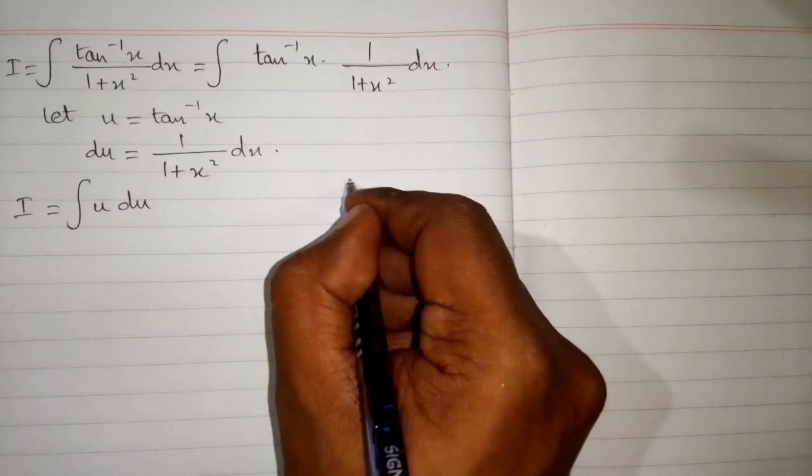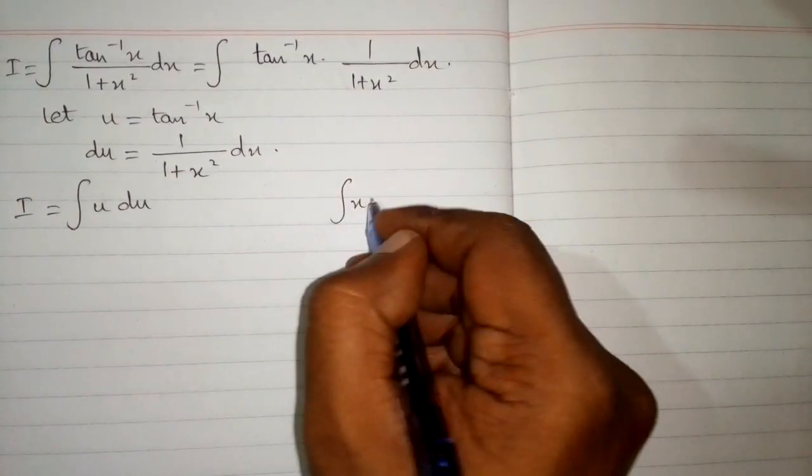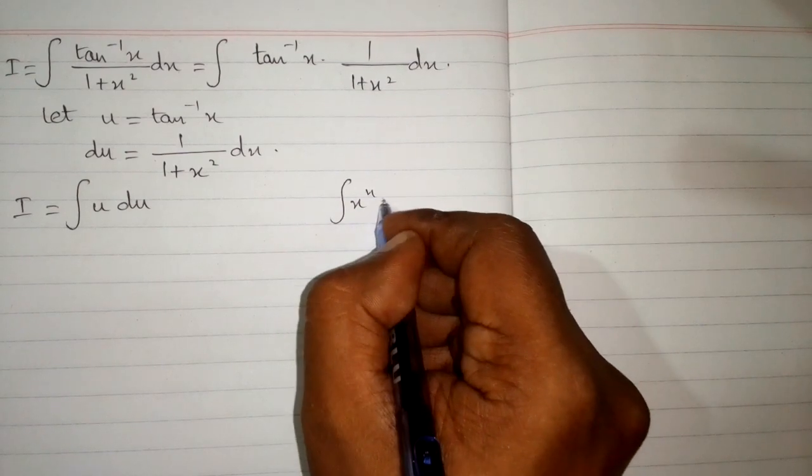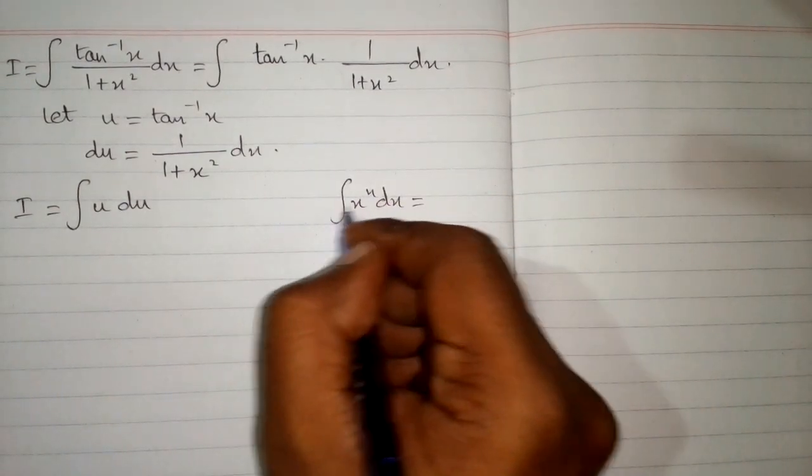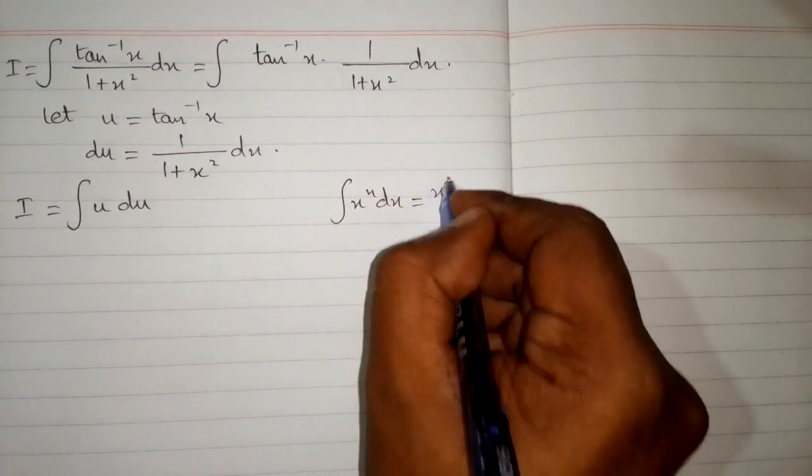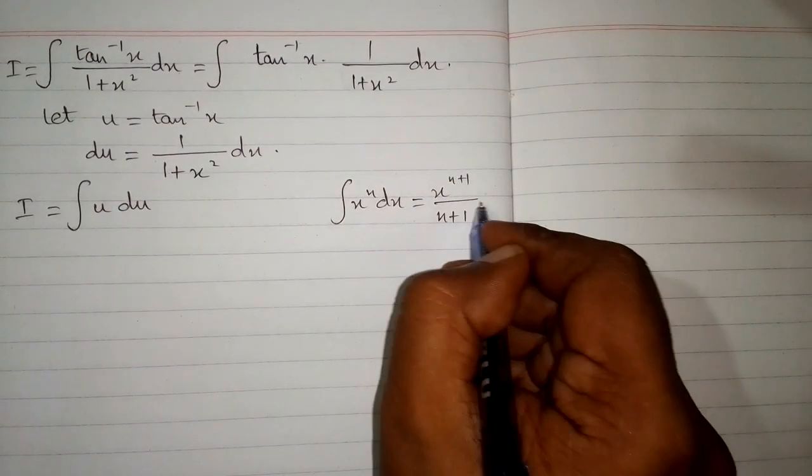We can use the power rule of integration: the integral of x to the power n equals x to the power n plus 1 divided by n plus 1 plus c.